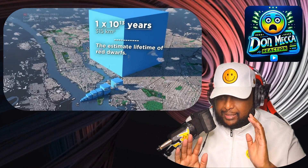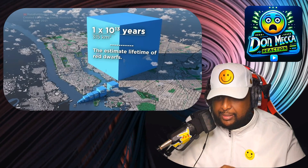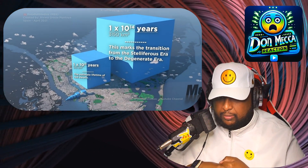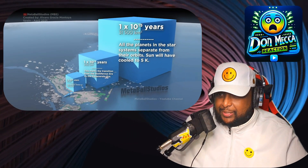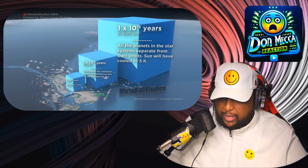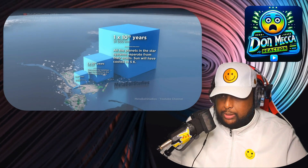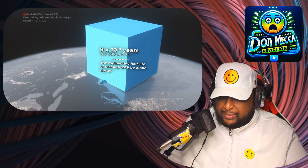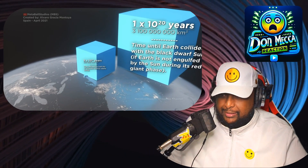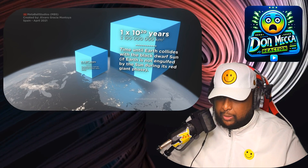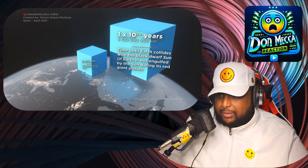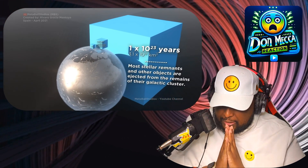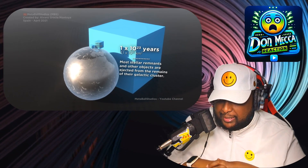13.8 billion years — this marks the transition from one era to another. More big words. All the planets in the star system separate from their orbit. The sun will have gone full red giant. The radioactive half-life. Time until Earth collides with the black dwarf sun — if the Earth is not engulfed by the sun during its red giant phase. Most stellar remnants of other objects ejected from the remains of their galactic cluster.